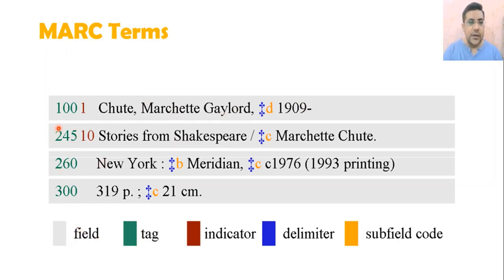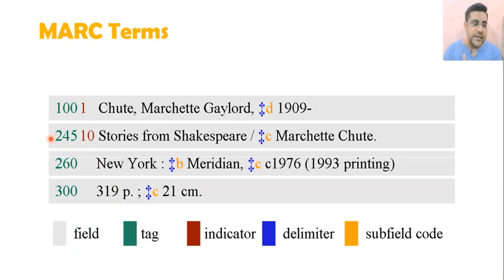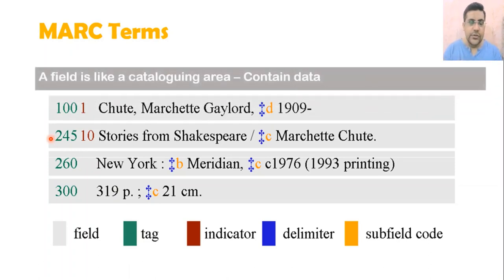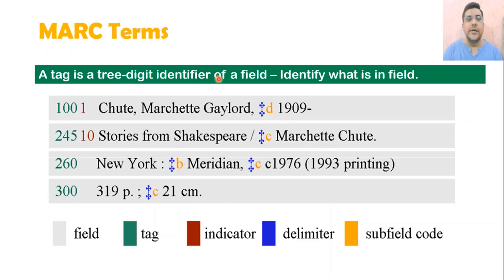In MARC we have fields, but how does the computer know that this information is about the author or about the title? For example, if we assign tag 100, the computer will know this information is about the author. A tag is a three-digit identifier that identifies what a particular field is about — so 100 is for author, 245 for title, and 260 for imprint area.